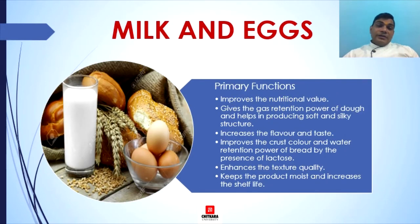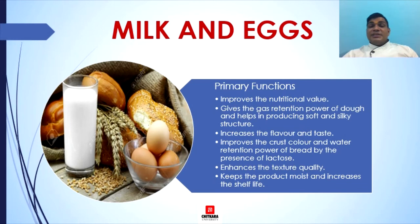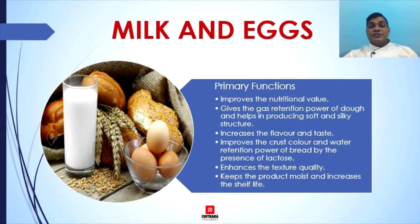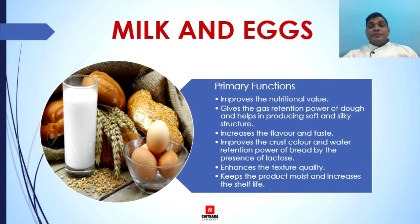The next ingredient is milk and eggs. These two also act as enriching agents in dough making. The function of using milk and eggs is primarily as improvers of the nutritional value of bread. They also give the gas retention power of dough and help in producing a soft and silky structure. They also increase the flavor and taste of the bread, and eggs help as a binding agent as well. Milk helps improve the crust, water retention power, and enhances the texture quality, keeping the product moist and increasing the shelf life of the bread.